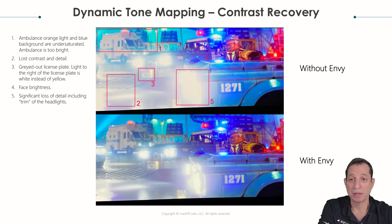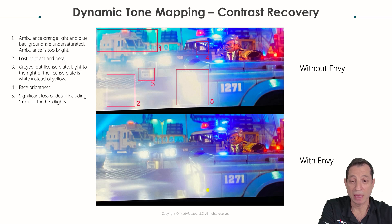Here's another example where we can see all the details — look at this area in the headlight, which is blown out compared to the Envy being able to restore this lost detail. Likewise, look at the loss of contrast in the street and in the little Lego knobs compared to all the clarity that's here.